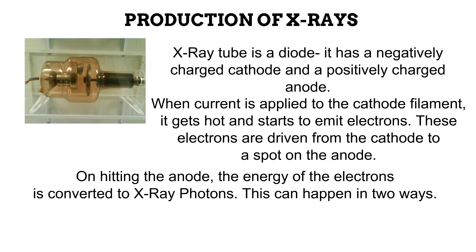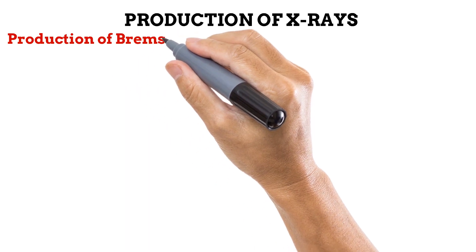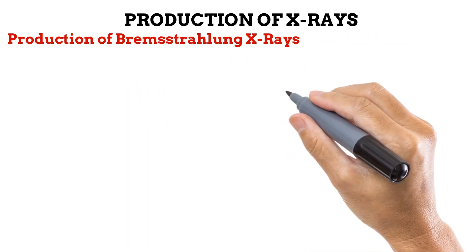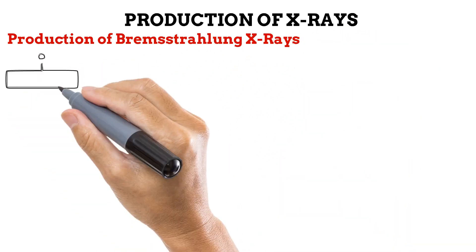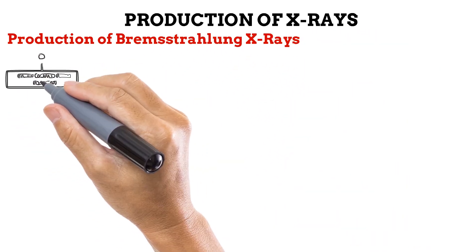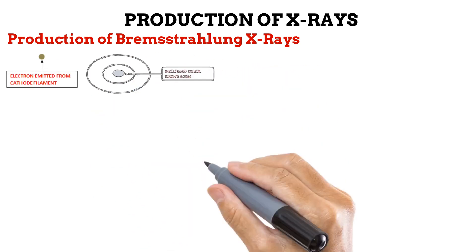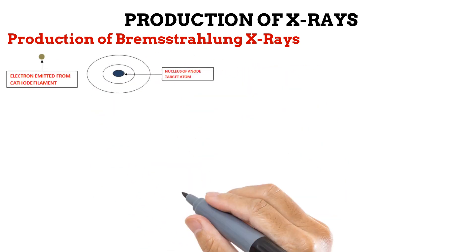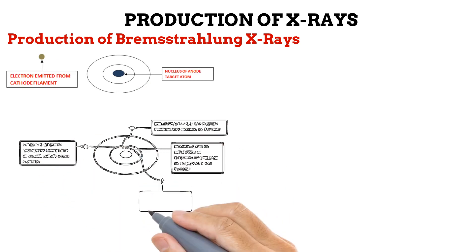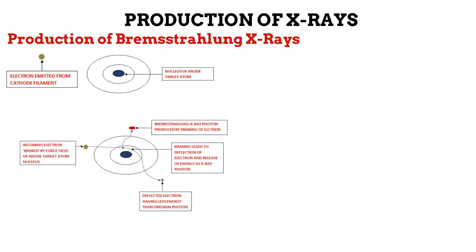The conversion of electron energy to X-ray photons can happen in two ways. The first way is the production of Bremsstrahlung X-rays. This process occurs between the electron released from the cathode filament and the nucleus of an atom on the anode focal spot. This diagram gives an overview of the entire process.